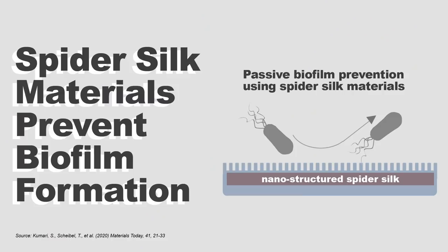How can we prevent biofilm formation if antibiotics are not active anymore? This can be done with so-called nanostructured surfaces. And here, spider silk has really outstanding properties because, by nature, the surface structure of silk is nanostructured.